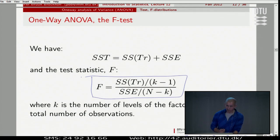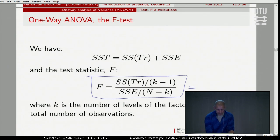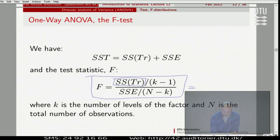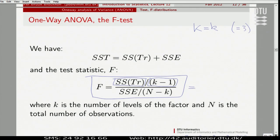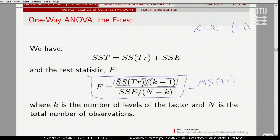In the numerator, we take the sum of squares for treatment and we divide by the number of groups minus one. I realize I have used capital K, which is the same as small letter k. In our example, this is the number three. We take this sum of squares of treatment and divide it by number of groups minus one — we call that MS treatment, or mean square treatment.